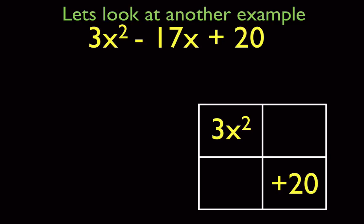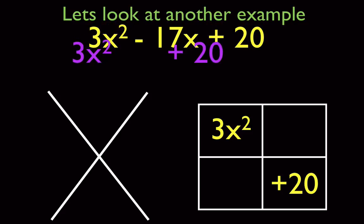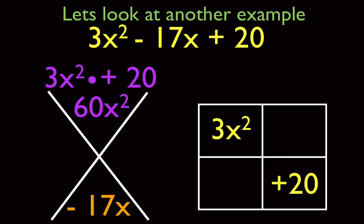The first thing we know every single time is the x squared term is always in the upper left hand corner and the 20 term is always in the bottom right hand corner. All we need to know is how can we split up that negative 17. We're going to need to use our diamond problem. We take our two end terms and multiply those together — we're looking for the combination that makes 60. From there we bring down our negative 17, and now we're looking for two numbers that multiply to equal 60 and add up to equal negative 17.